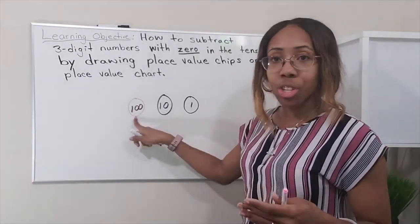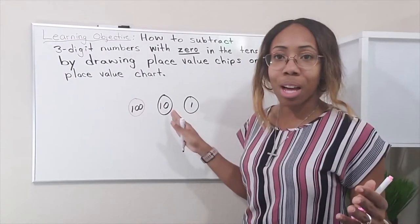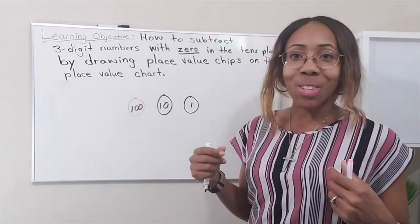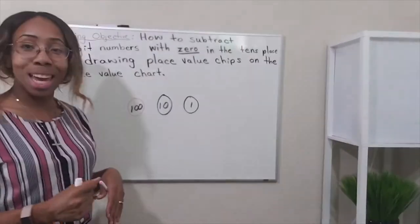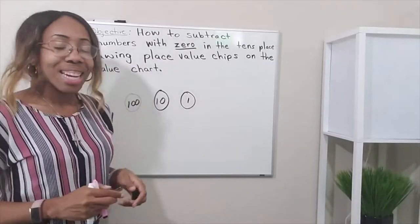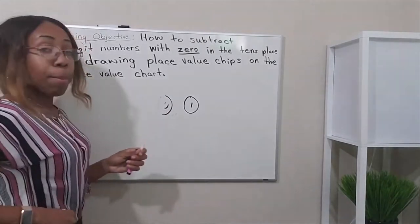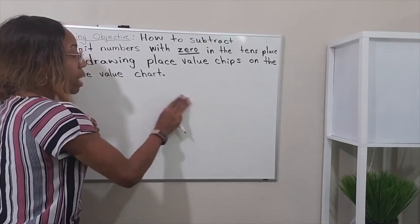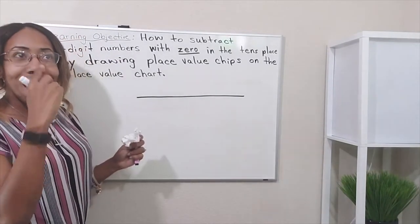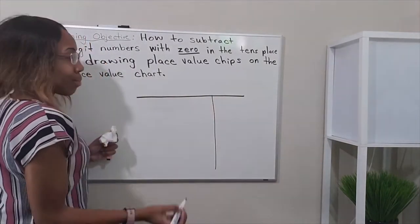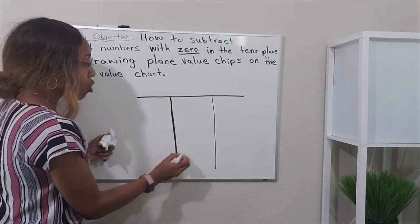Place value chips represent the hundreds place, the tens place, and the ones place. We're going to start using a three-digit number and then start taking away, or subtraction. It's very important that you create a place value chart. A place value chart looks like a little mini T, like a tic-tac-toe type chart — but it's super cool.